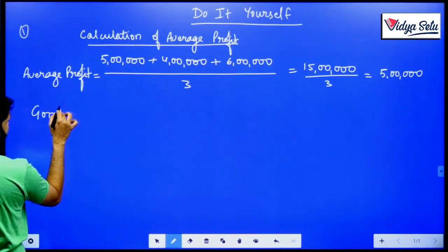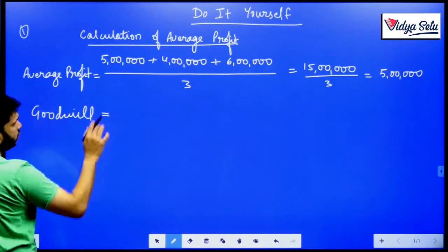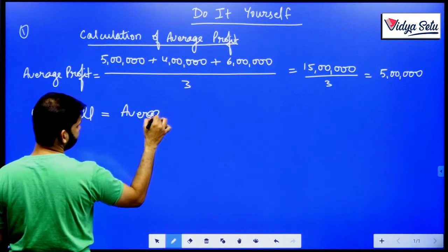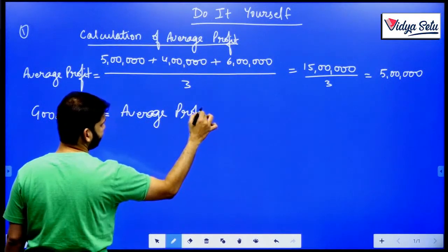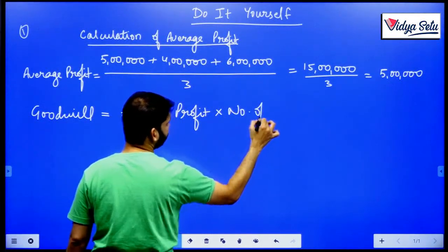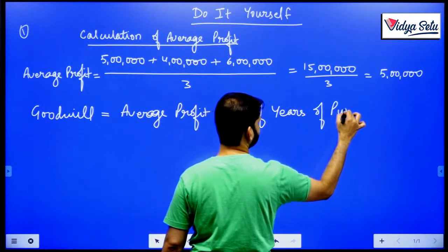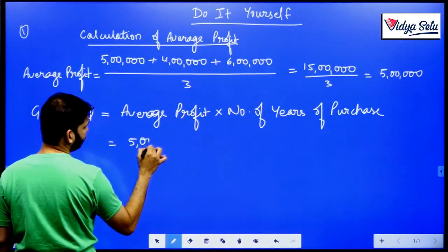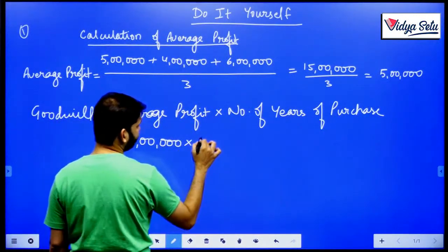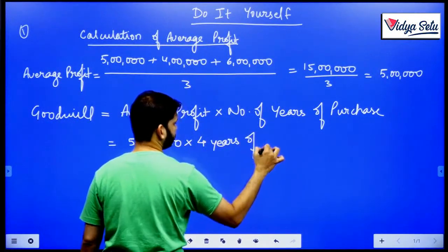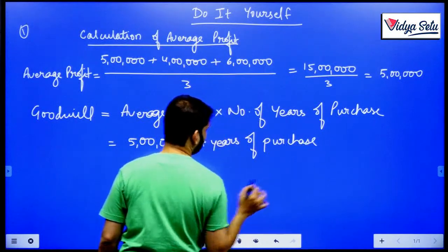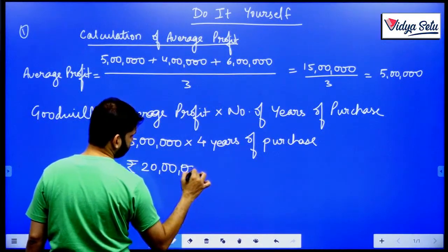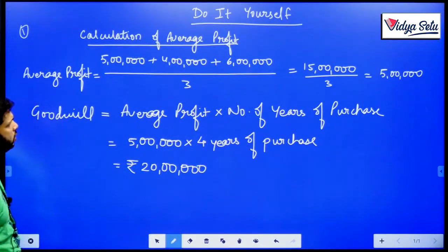Now, what is goodwill? Students, in the exam you have to write down the formula as much as possible. Goodwill in this method is average profit multiplied by number of years of purchase. So this comes to 5 lakhs multiplied by 4 years of purchase, which gives goodwill of 20 lakhs.